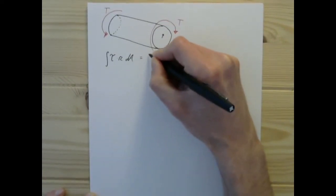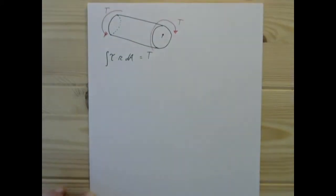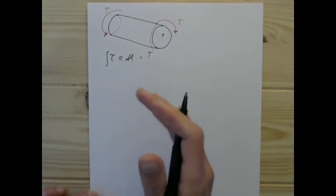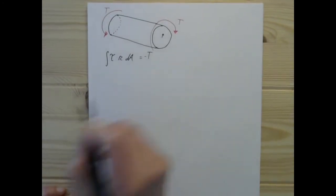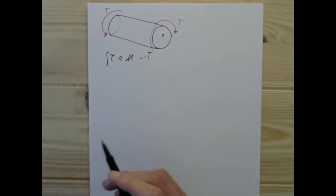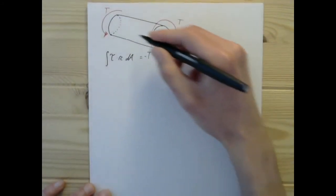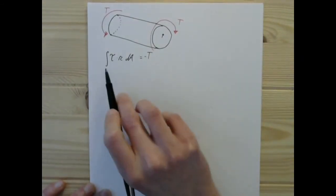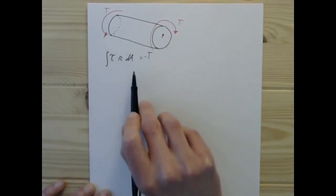...has to be equal to the torsion itself, or equal and opposite to the torsion, because we're going to have to have equilibrium at a moment about the x-axis. And so we're going to have to maintain this.